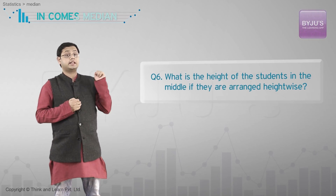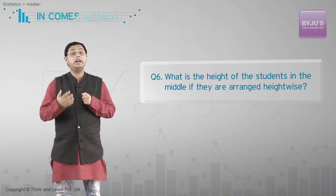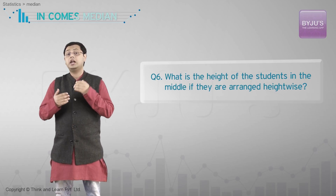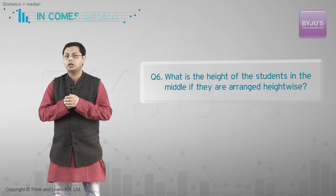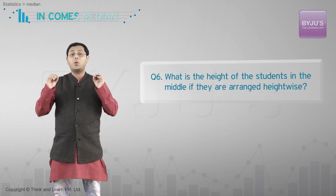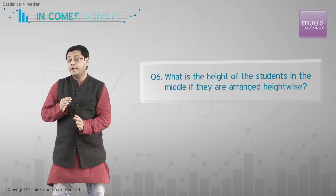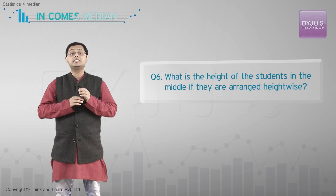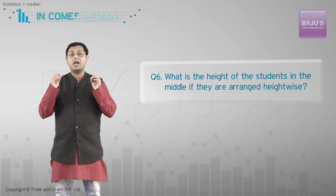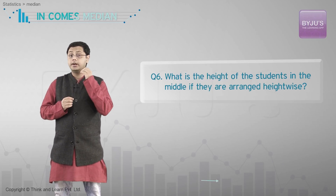When the mean becomes misleading because of extremes or outliers, we need some other way of saying what a typical value is. This is where we answer the question: what is the height of the students in the middle if they are arranged height-wise? We can do this by quite literally taking the middle value. This different sort of average is called the median.